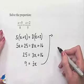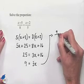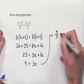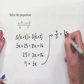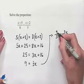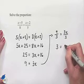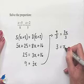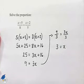We'll have both sides of the equation divided by 3. 9 over 3 equals 3x divided by 3. 9 thirds equals 3, and 3x over 3 is equal to x. So our solution is x equals 3.